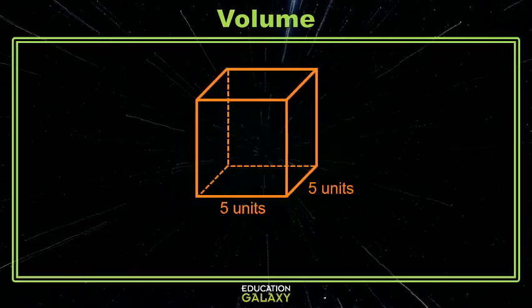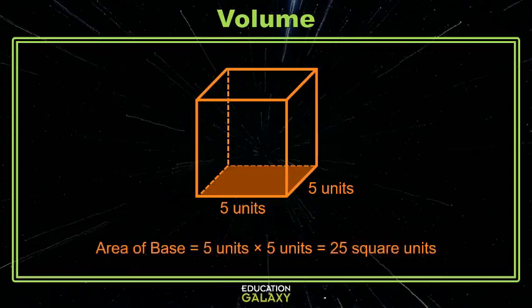Here I have a prism and I'm given two of its dimensions. Looks like the length and the width are both five units. So if I just wanted to know the area of the base of this prism, I know how to do that. I know that the area is just the length times the width and I get my nice two-dimensional measurement of 25 square units.